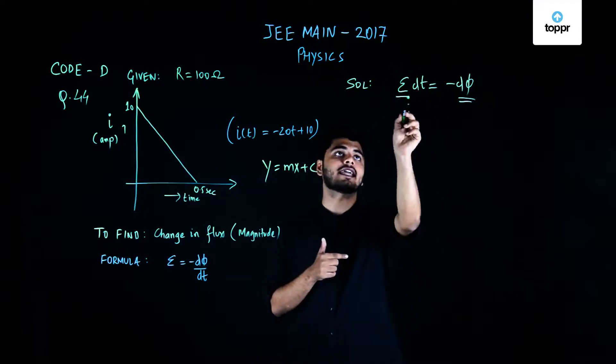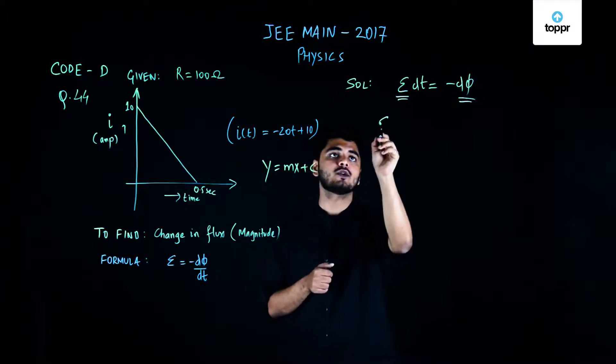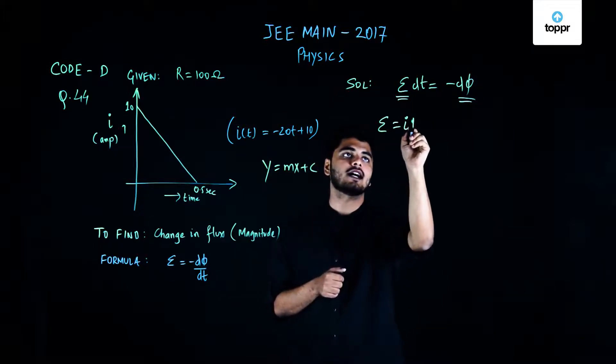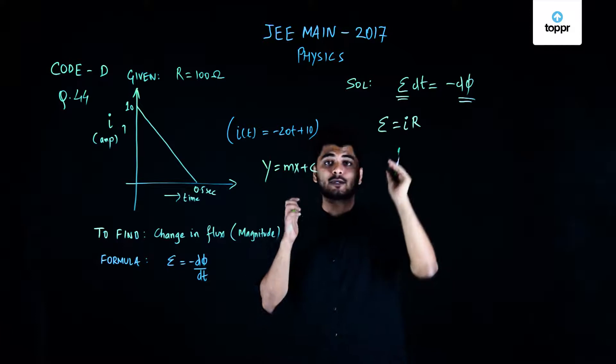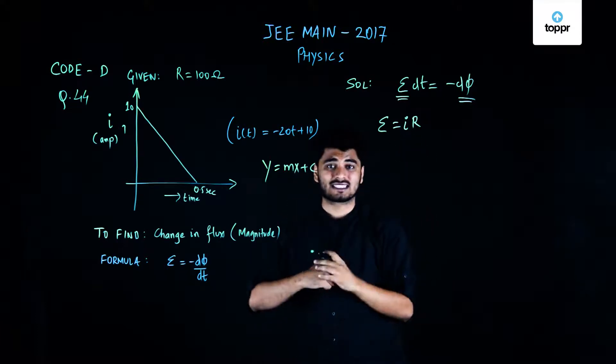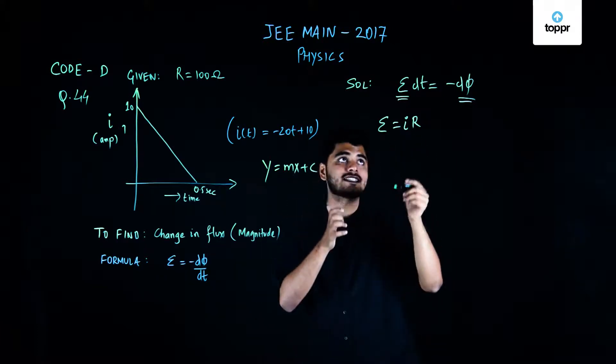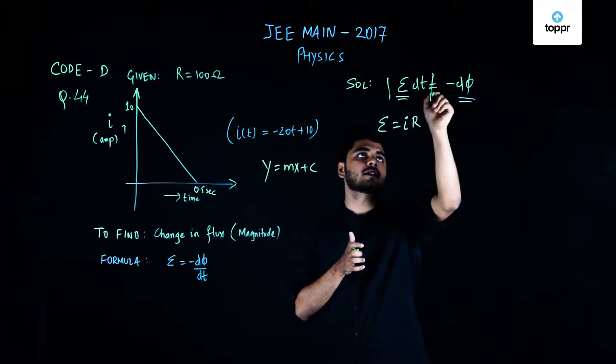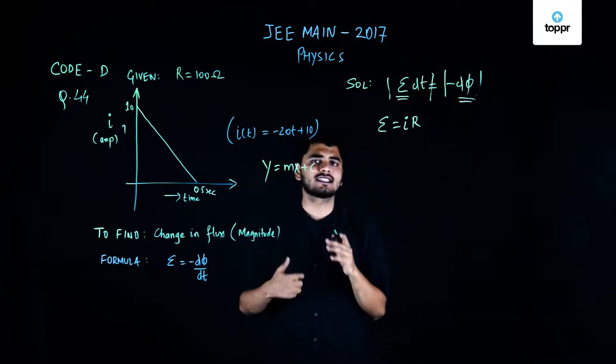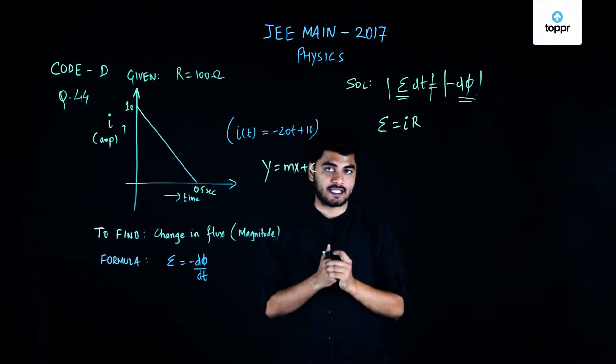Now what varies over here is the value of e because I know e is nothing but i times r. That is my potential difference is nothing but current into resistance. Now for now we'll just focus on the magnitude so I can remove the negative sign from here as we're trying to calculate the magnitude of change.